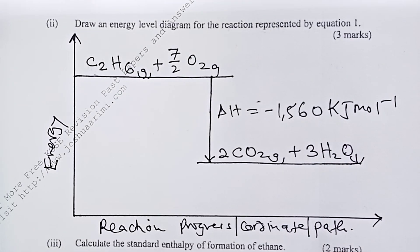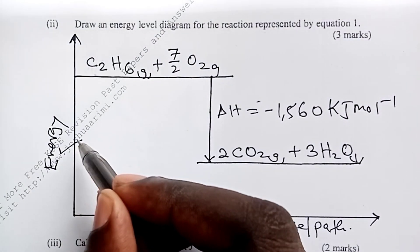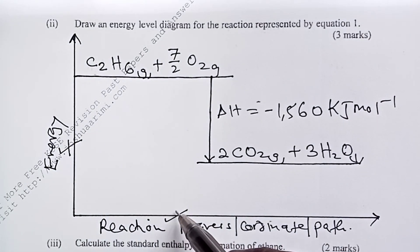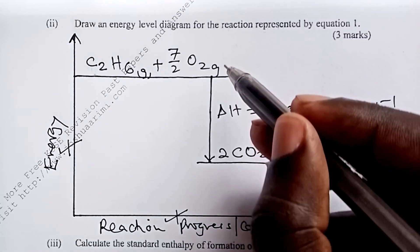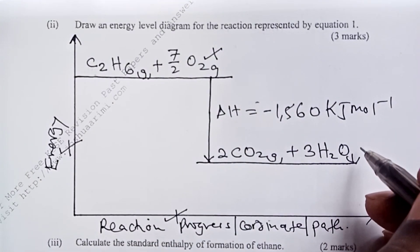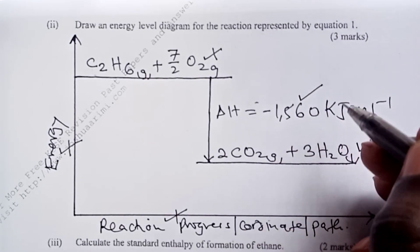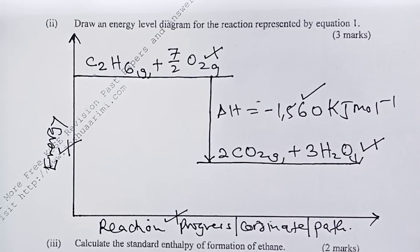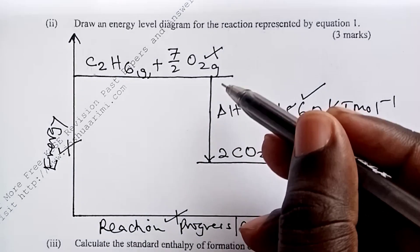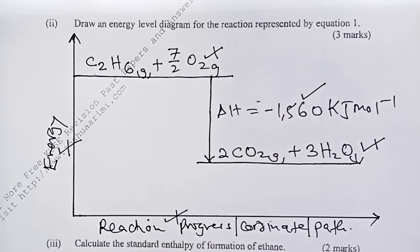Now it's three marks. So we would give a half for labeling the axis appropriately. Another half for the reactants, a half for the products and one whole mark for the change in heat or the change in energy levels. Remember this had to be shown as a negative. So if a student didn't show that, then the one mark would go.